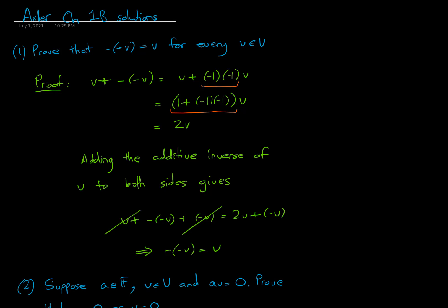Now when you add the additive inverse of v to both sides, you get this equation, and then the v and the −v cancels, so you get -(-v) = v.